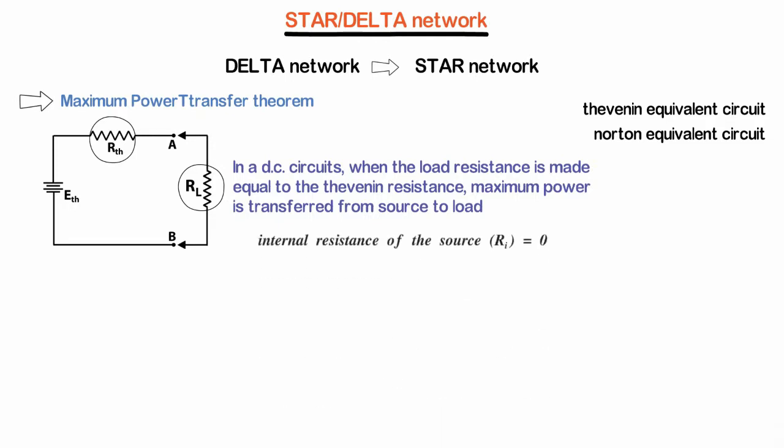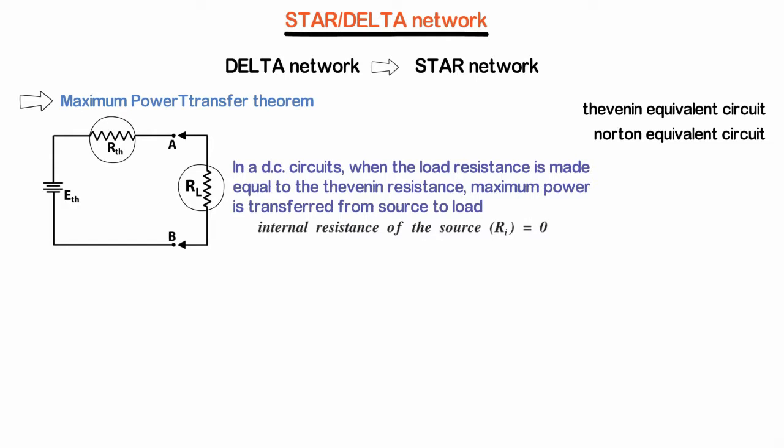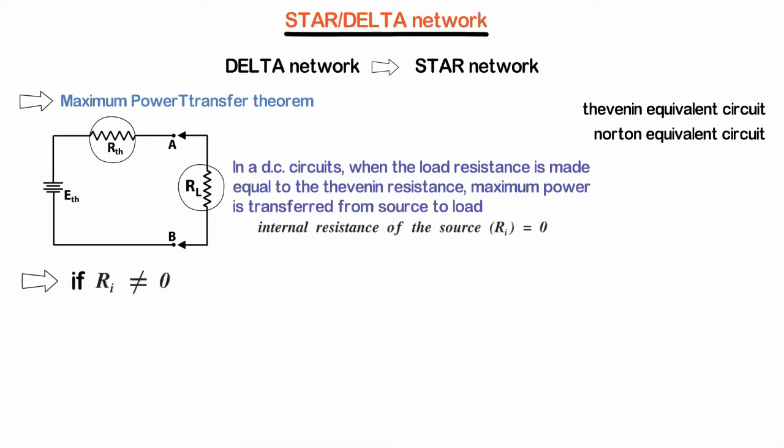Here we assumed that the internal resistance of the source is zero. If the internal resistance is not zero, then maximum power will be transferred from source to load when RL equals Rthevenin plus Ri. Here Ri is the internal resistance.